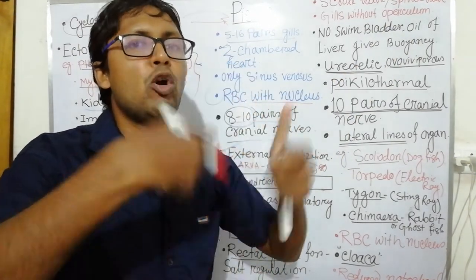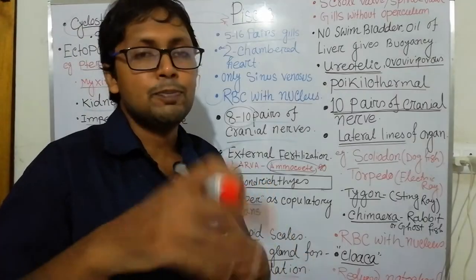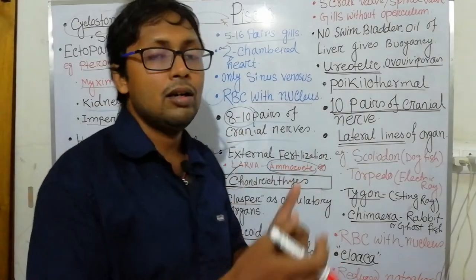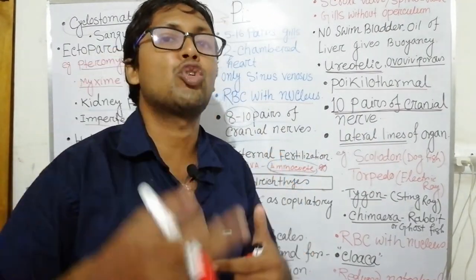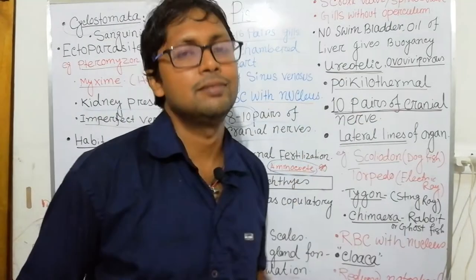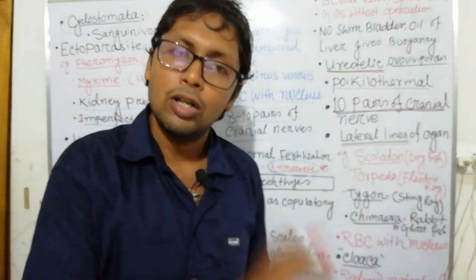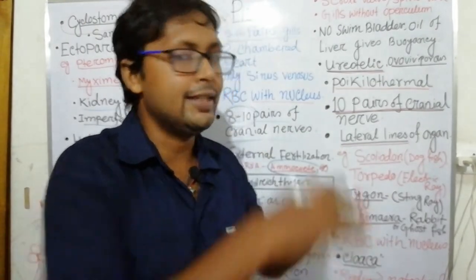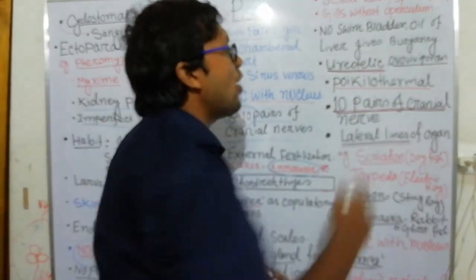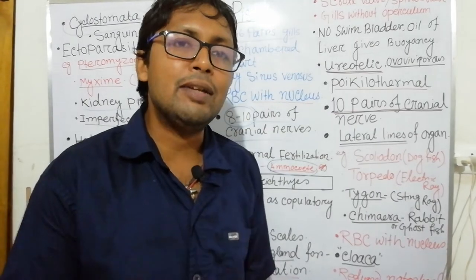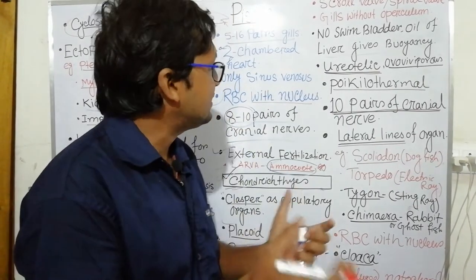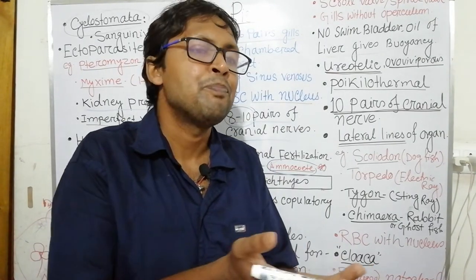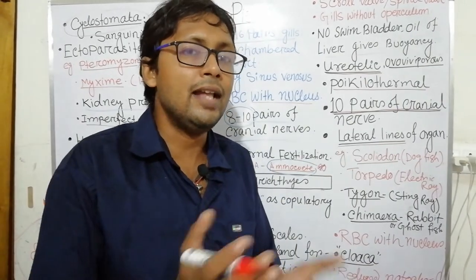The digestive system of Chondrichthyes is scrolled to increase absorption surface area. They have gills but no operculum — unlike Osteichthyes (bone fish), which have an outer operculum covering the gills. In Chondrichthyes, gills are open. The liver gives buoyancy — no swim bladder is present, so their liver contains oil or fat substance that provides buoyancy, as fat helps them float.